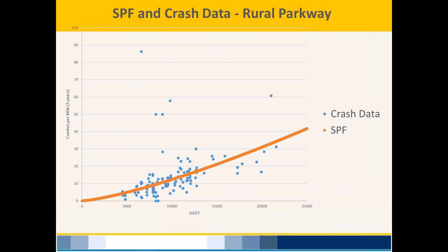Here's an example SPF for rural parkways in Kentucky. Moving away from critical rate factor may sound scary, but information from an SPF is used very similarly to CRF data. At the most basic level, both SPF and CRF determine which sites have more crash history than expected. An SPF is essentially a line of best fit for crash and roadway data — any points above the line have more crashes than expected, any below have fewer.